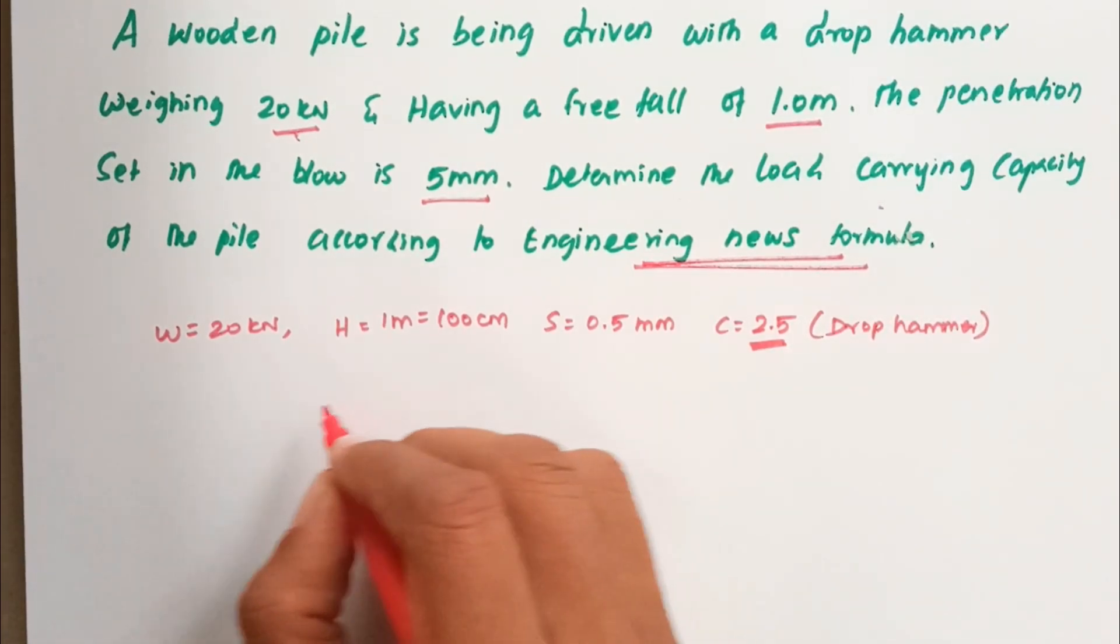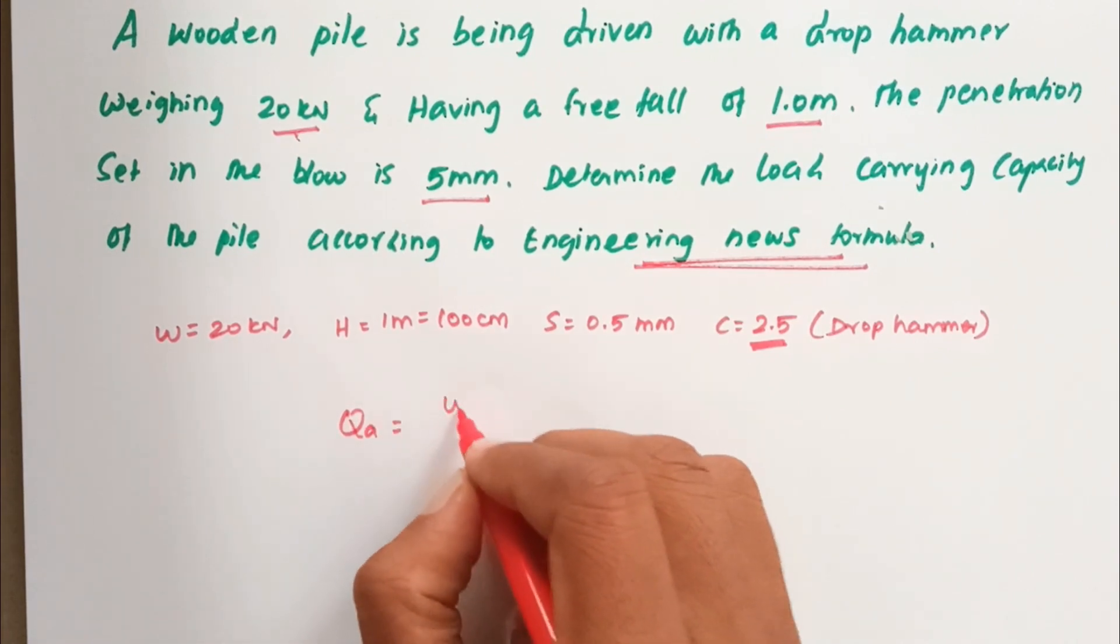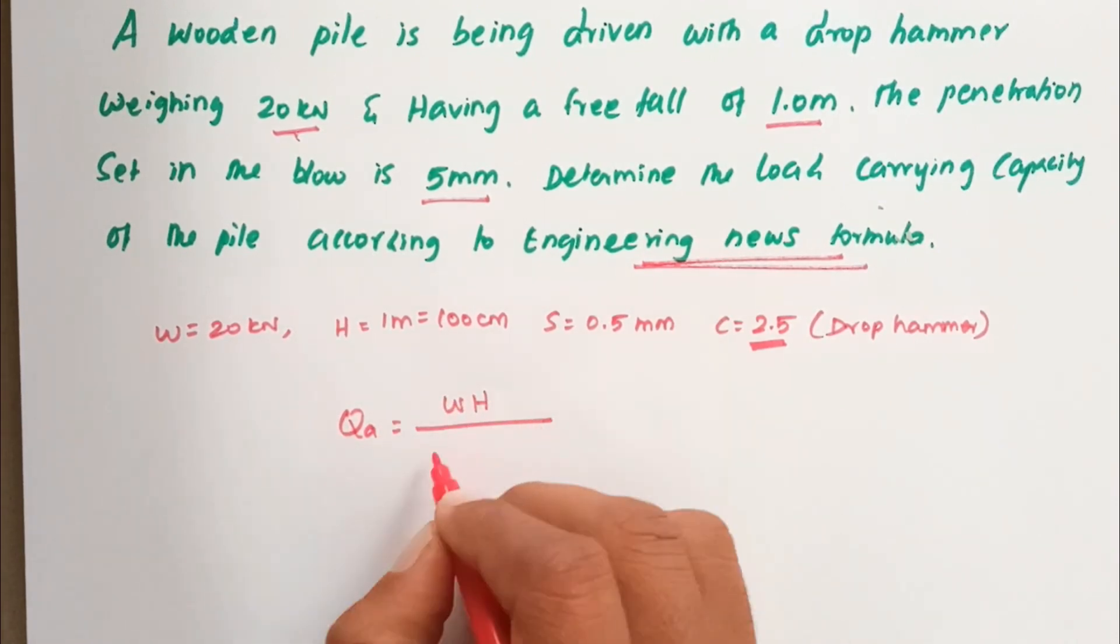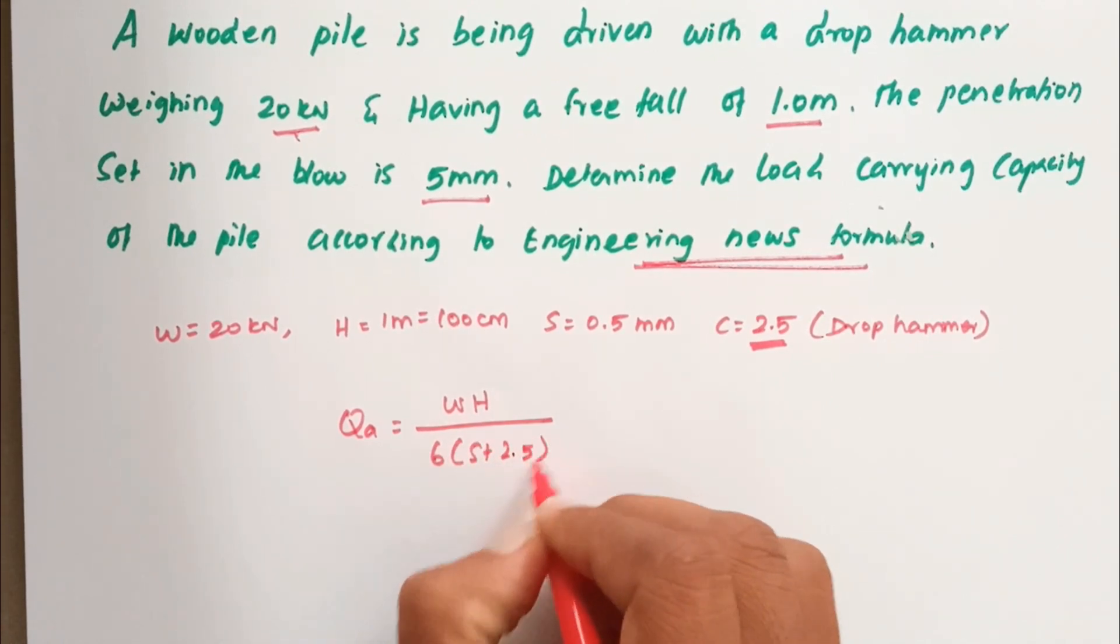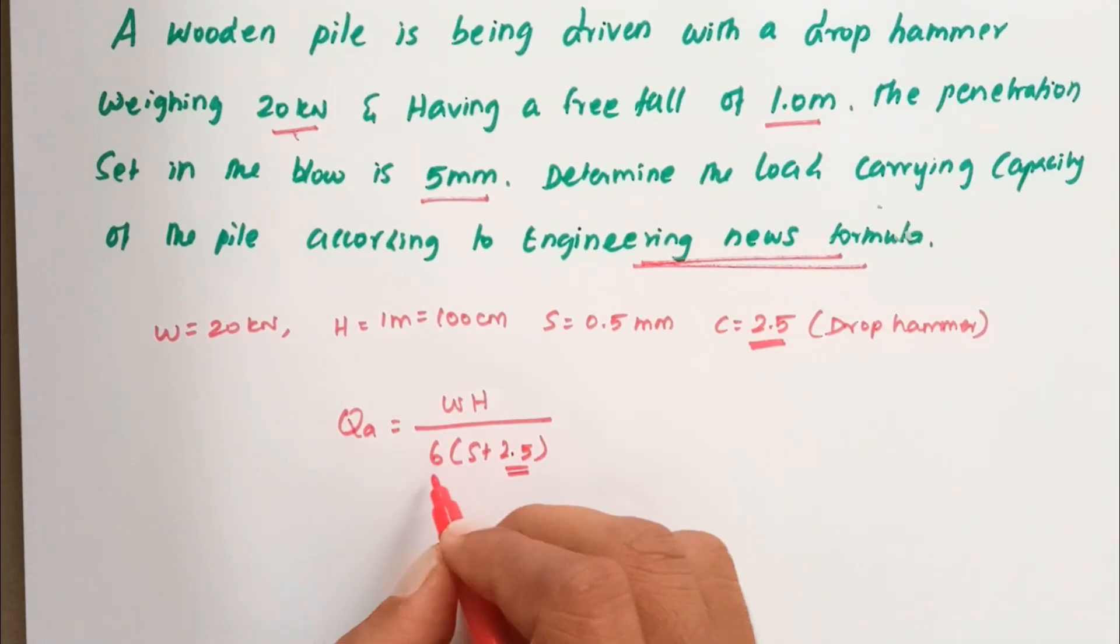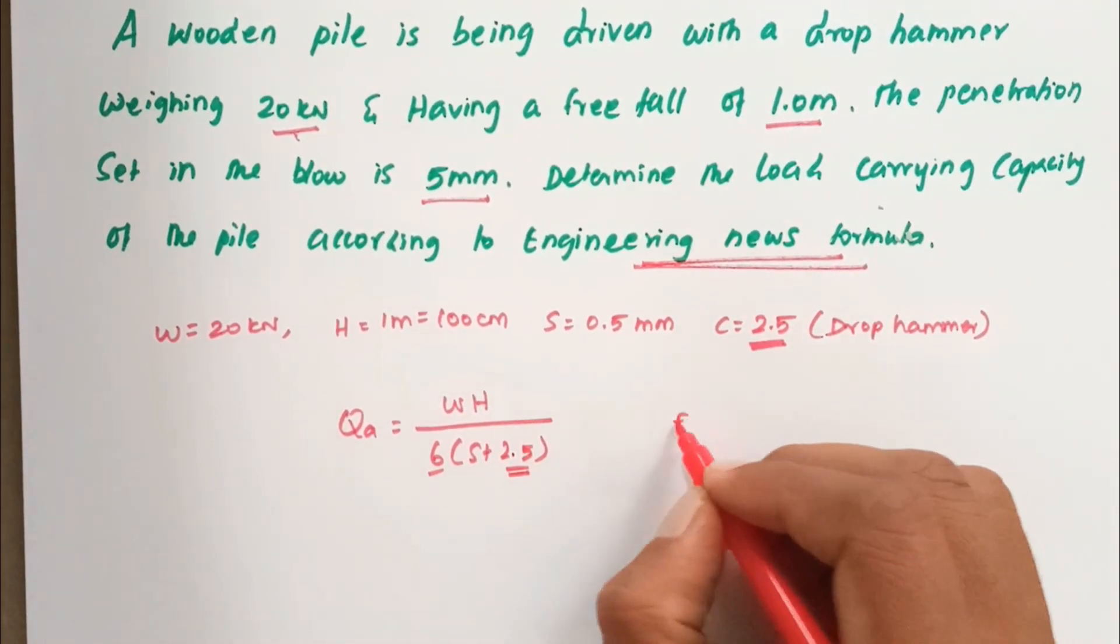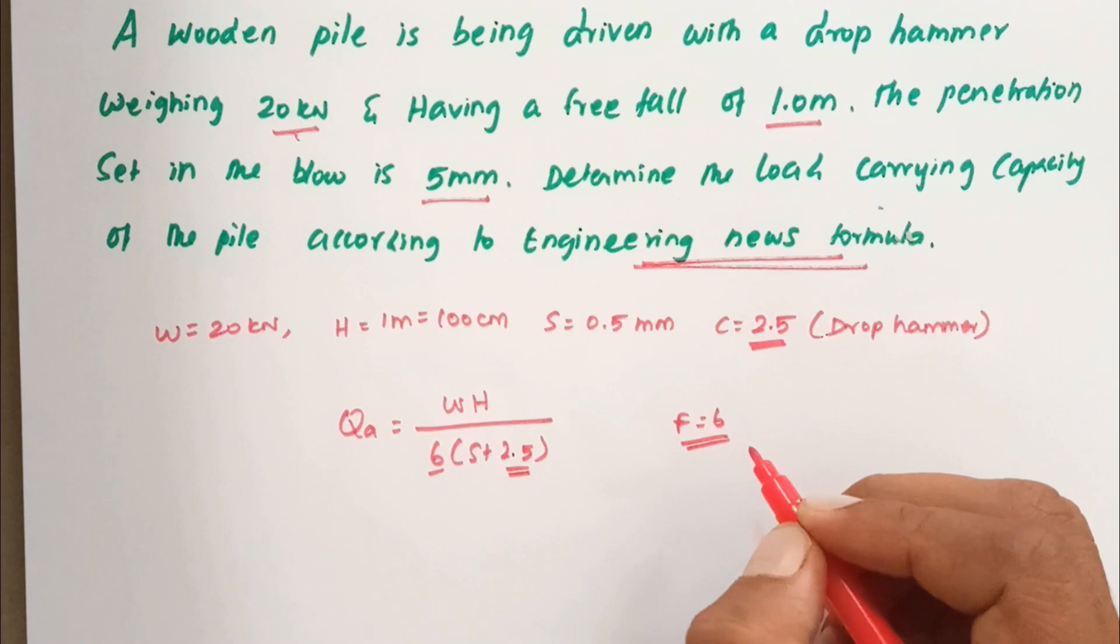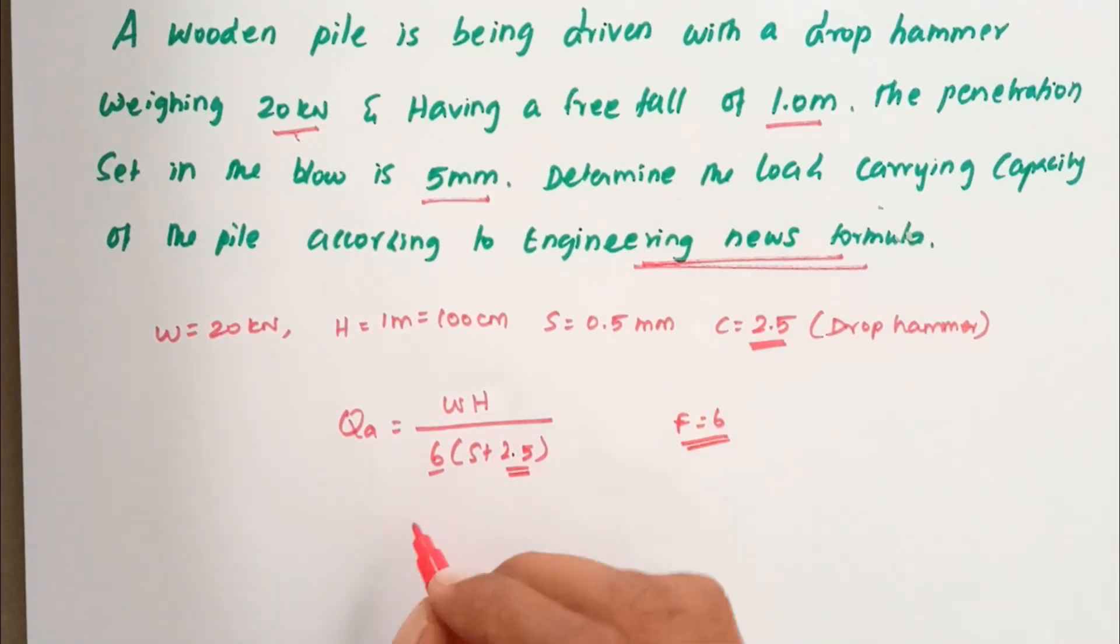Now, the engineering news formula: Qa equals W times H divided by 6 times (S plus 2.5). This is the C value, so 2.5 we can directly substitute, and F equals 6 we can directly substitute. Now we can substitute all the values.